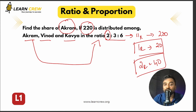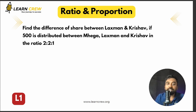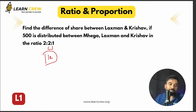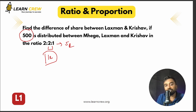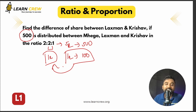Find the difference of share between Lakshman and Krishav if ₹500 is distributed among Mega, Lakshman, and Krishav in the ratio 2:2:1. Difference between Lakshman and Krishav = 2−1 = 1 ratio. Total 2+2+1 = 5 parts = ₹500, so 1 part = ₹100. Answer is ₹100 — one step!